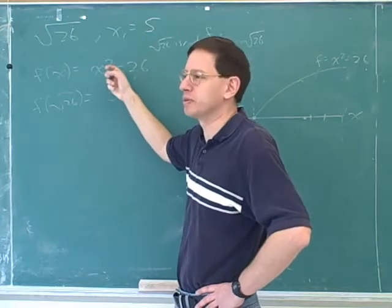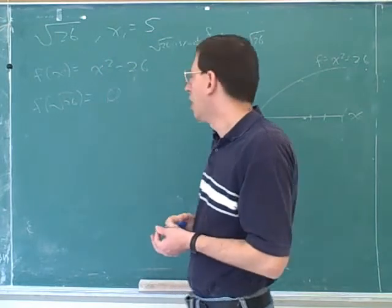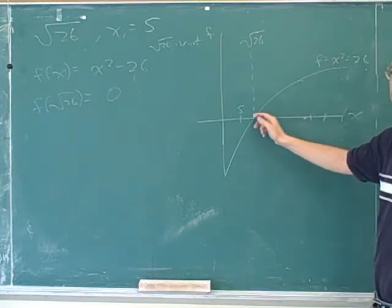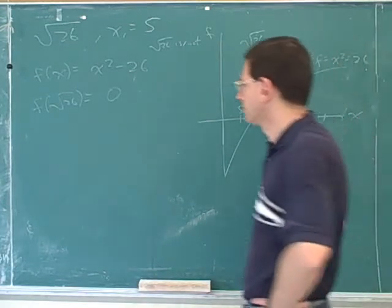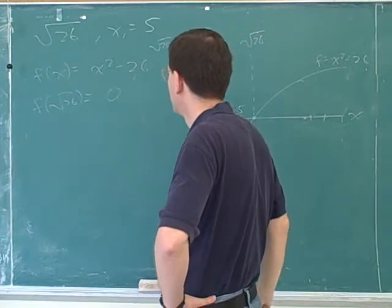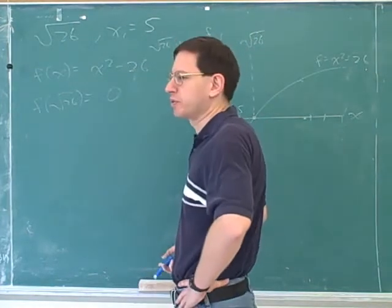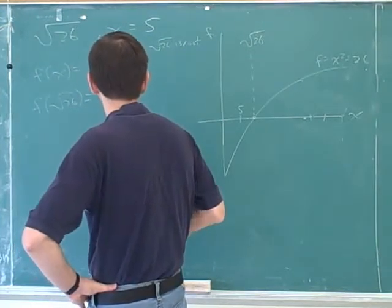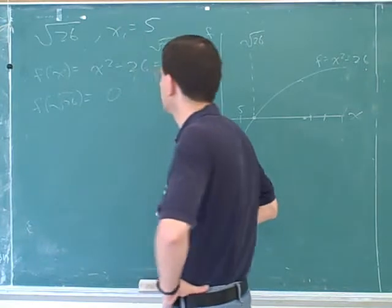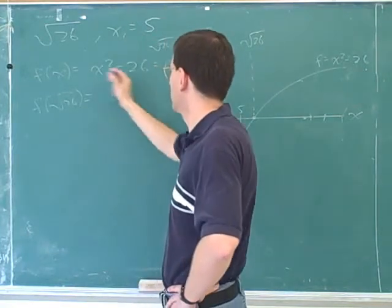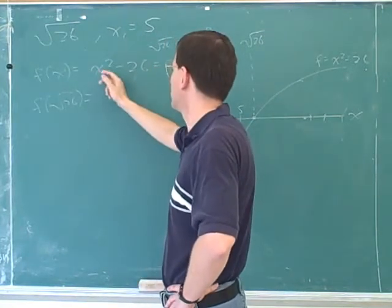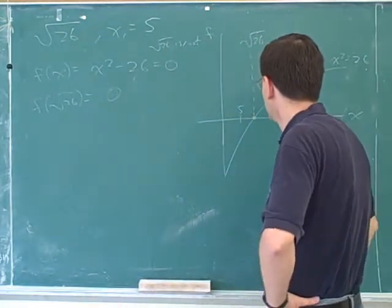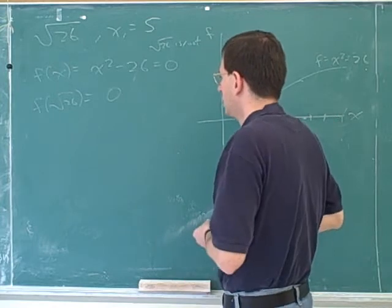But for now, let's see how we would use Newton's method here. Alright, so the point is that we've now found a function whose root is the square root of 26. And another way of putting it is what we're trying to do is we're trying to find an equation whose solution is the number you're going for. So here's an equation, and the solution of this equation would be the square root of 26, which is what we're trying to go for.